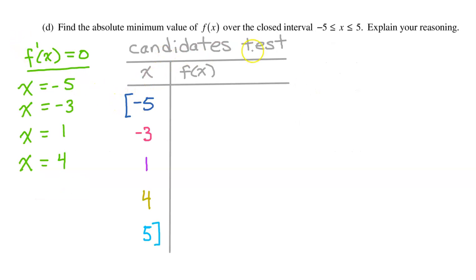Now we can set up the candidate's test, which is really just a t-chart of f of x, where the x values include the critical points that we just found and the endpoints of the interval. Now we need to find the value of f at each x value.